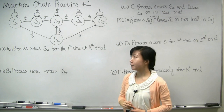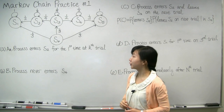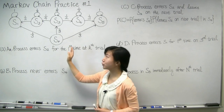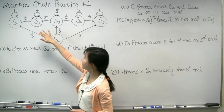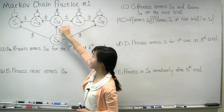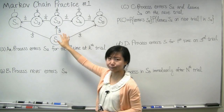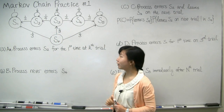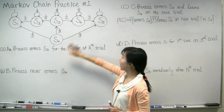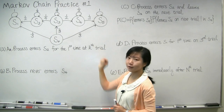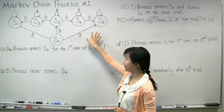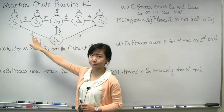On the other hand, if on the first trial the process makes a transition from S0 to S3, it can then either transition to the left, transition to the right, or make a self-transition back to state S3. If the process ever enters the left of the chain, it will never be able to come to the right. On the other hand, if the process ever enters the right of the chain, it will never be able to go to the left.